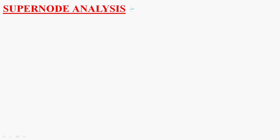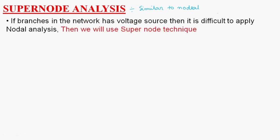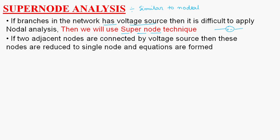Hi guys, today we are going to learn about supernode analysis. Supernode analysis is similar to nodal analysis, but we use supernode analysis when a branch in the network has a voltage source — it becomes difficult to apply normal nodal analysis. At that time we go for the supernode technique. If two adjacent nodes are connected by a voltage source, then the nodes are reduced to a single node and equations are formed.